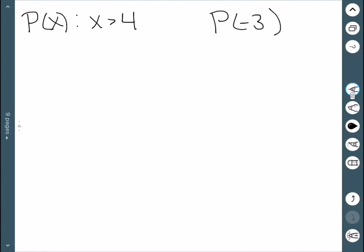Another one: P(-3). This one says -3 is greater than 4, which is false. But it is still a proposition, just a false proposition.